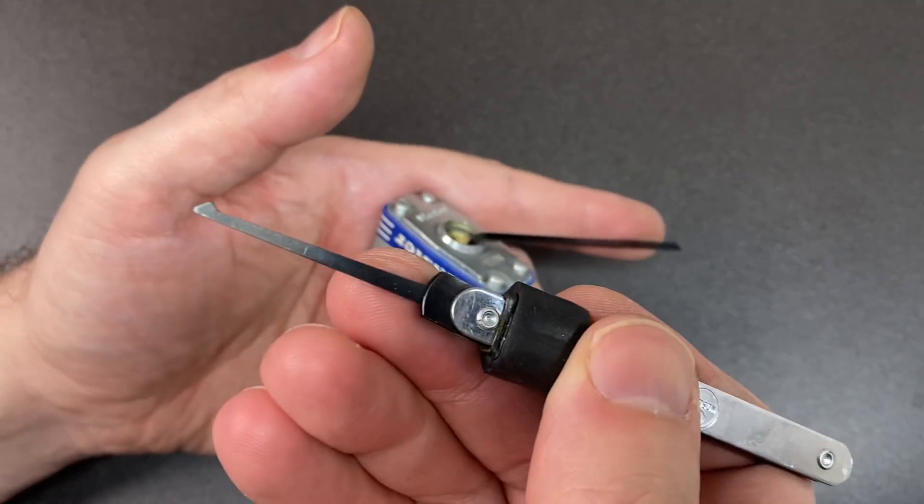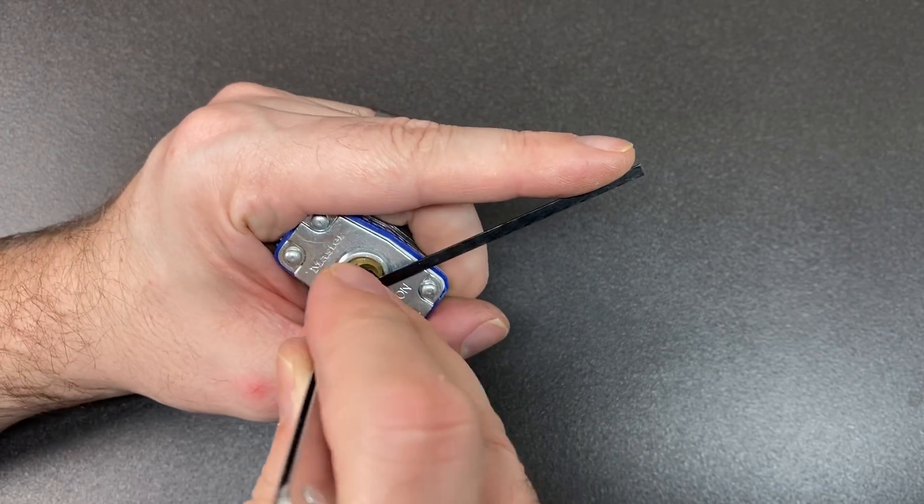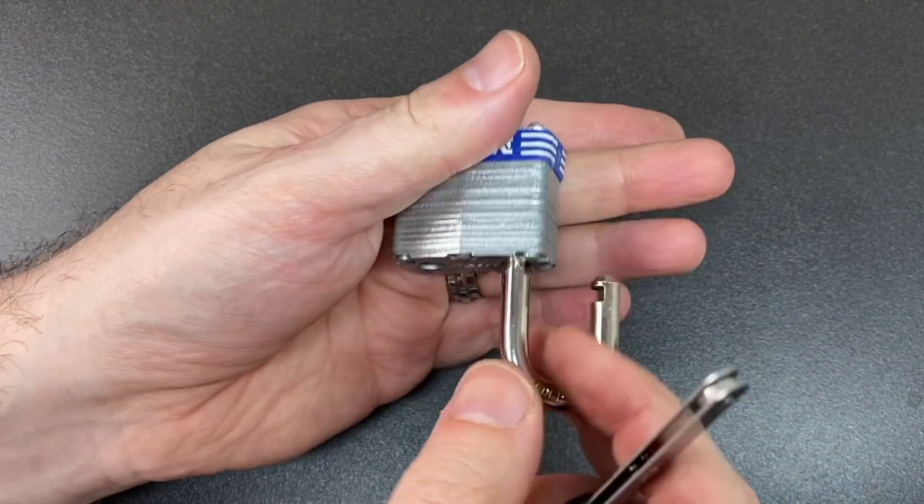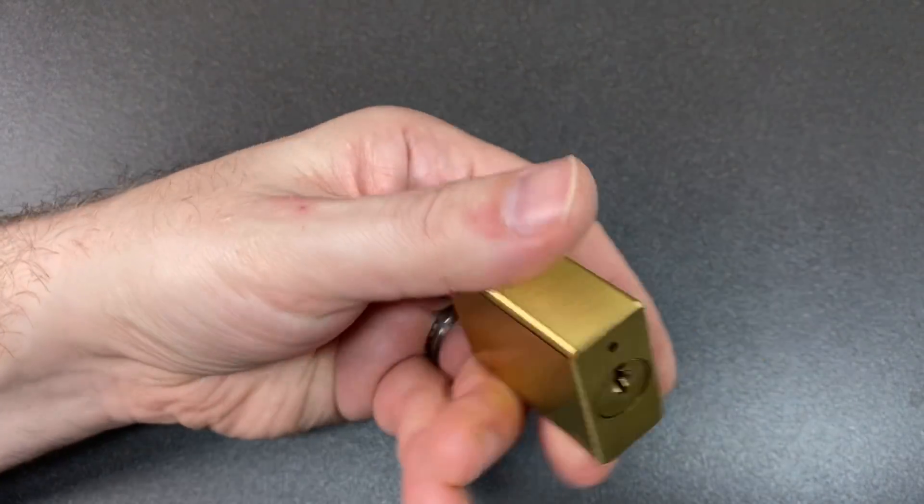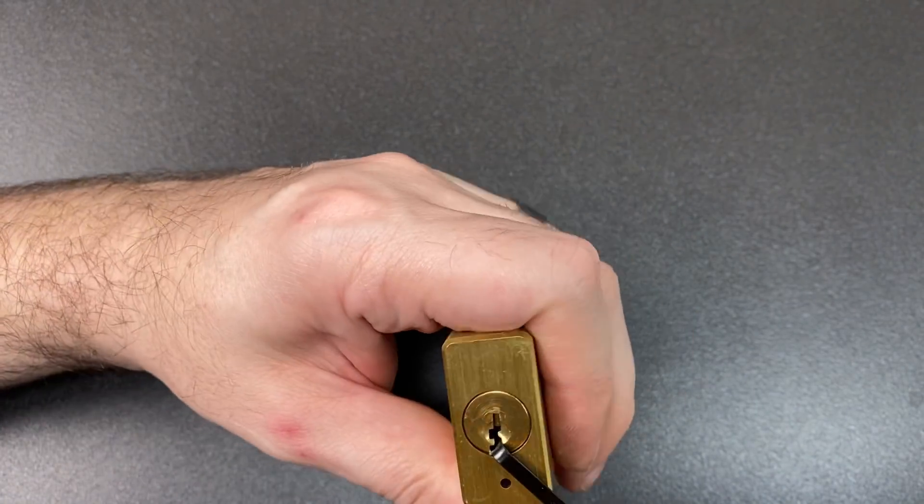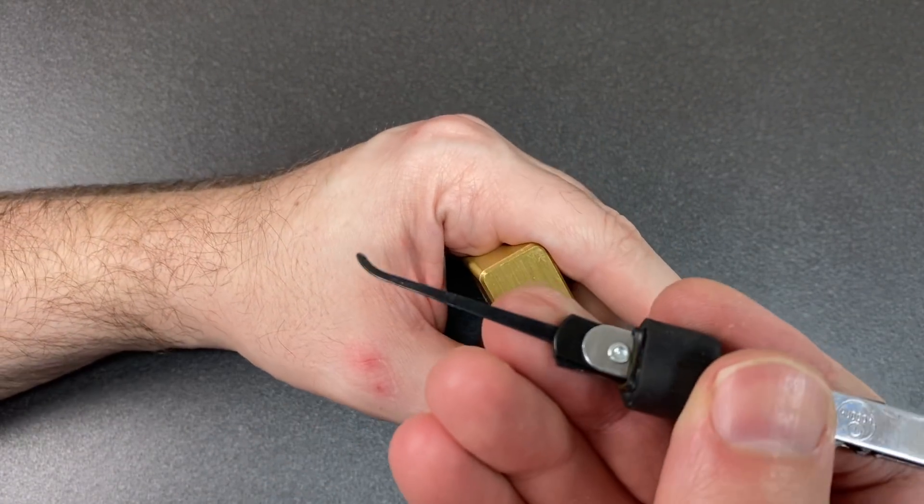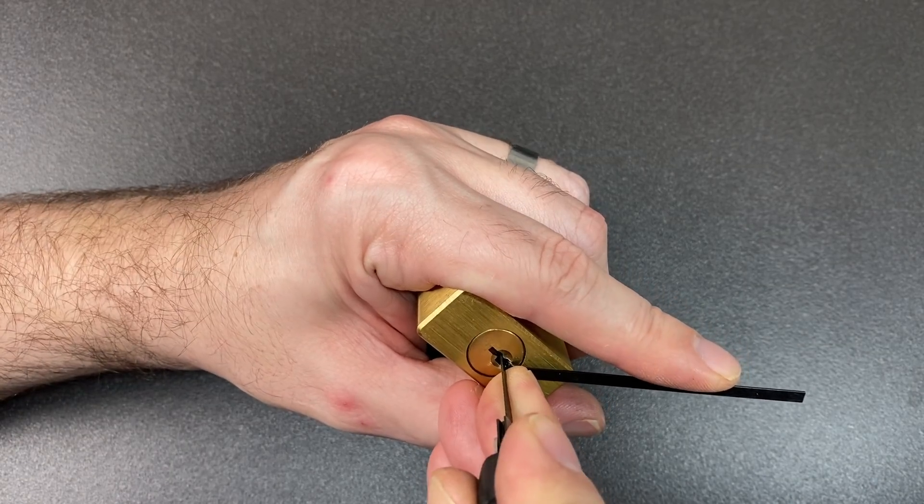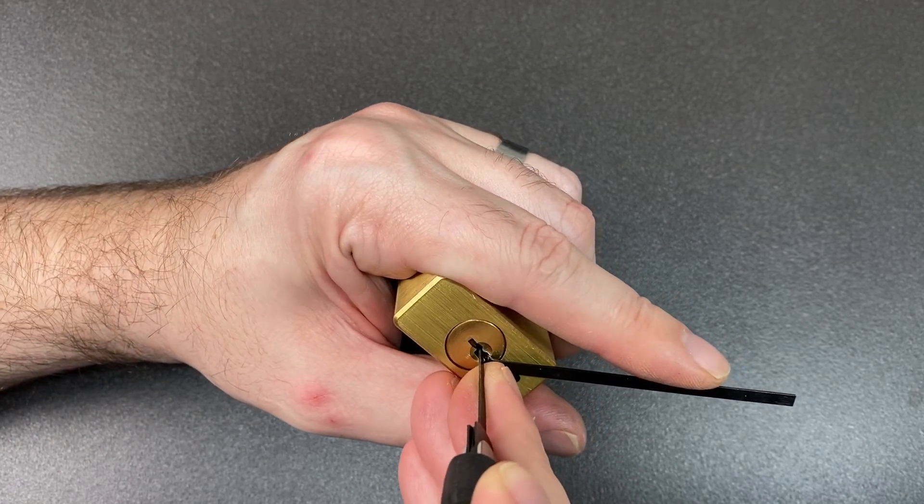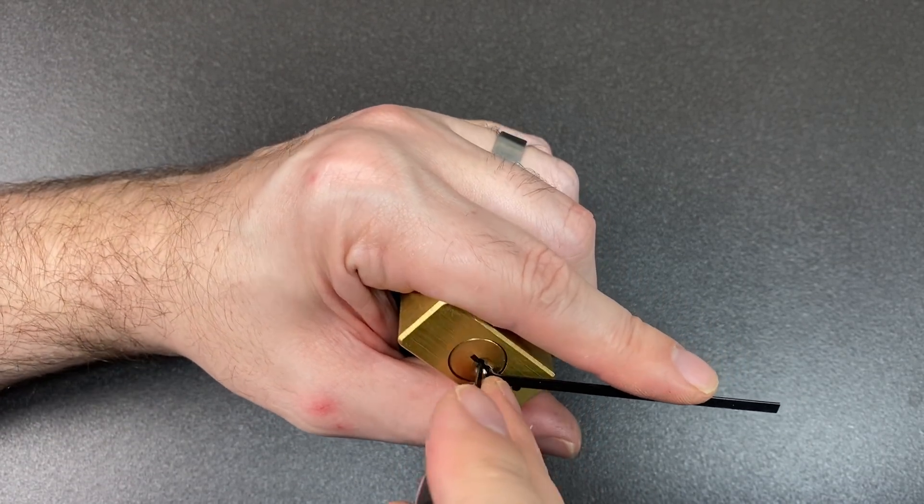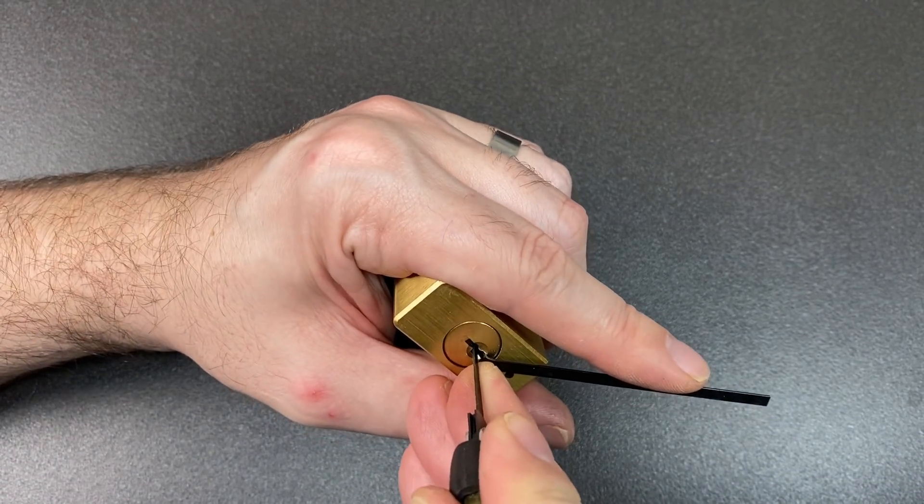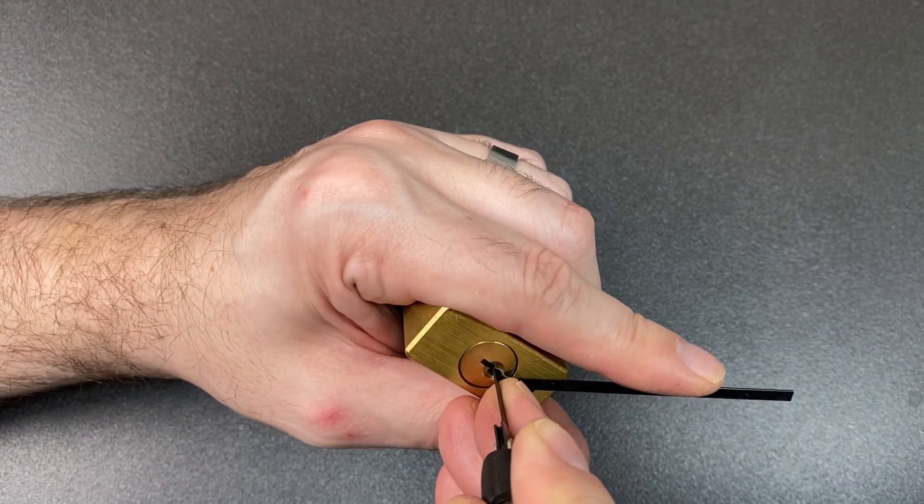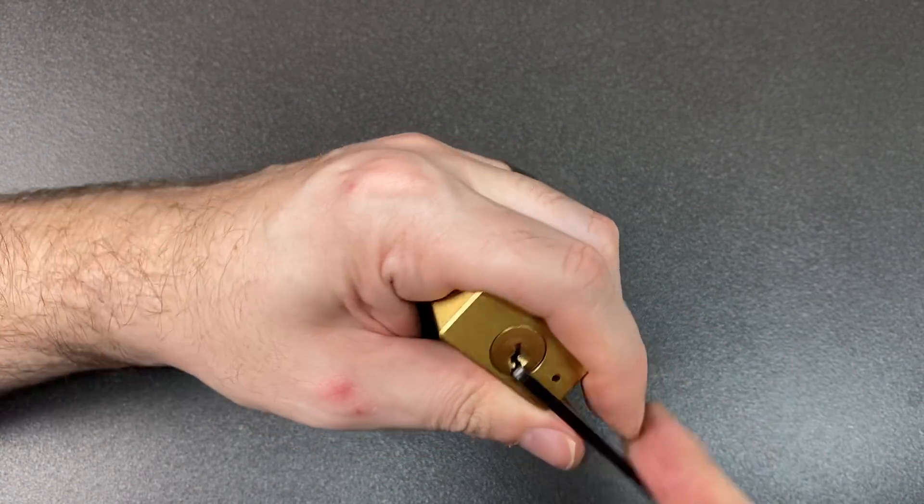Just a Master Lock 3, but we'll try and zip it with this half diamond. So light tension and press up and zip—there we go, straight away. This little five-pin padlock is actually a really fun pick with lots of spools in, so I'm going to try and use this hook. It's got a relatively open keyway, so should be okay. Now we're just going to try to find any binding pins and set them. And there we go.